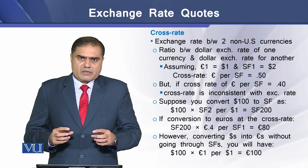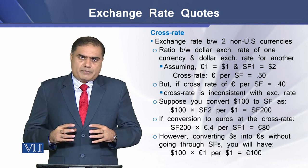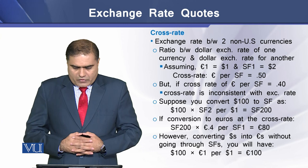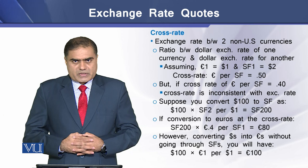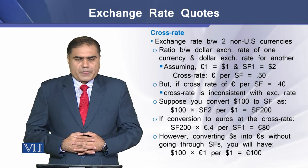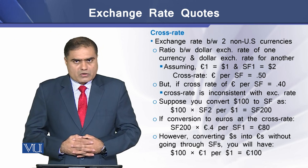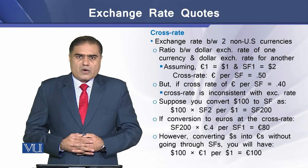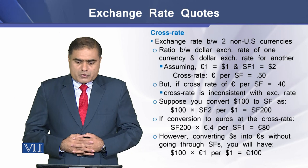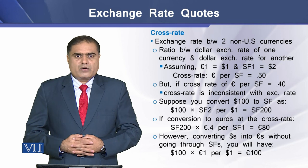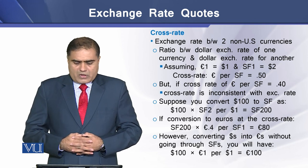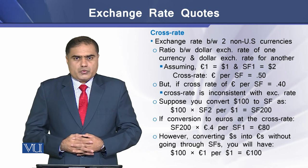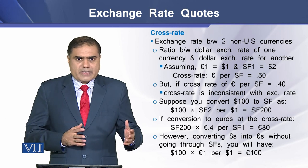This means there is some inconsistency between the cross rate and the exchange rate. Let's take an example to understand this inconsistency and the potential benefit a foreign exchange trader can have using it. Assume you can convert 100 dollars to Swiss francs, where two Swiss francs are equivalent to one US dollar, giving you 200 Swiss francs. Converting these at the cross rate of 0.40 euro per Swiss franc gives you 80 euros.